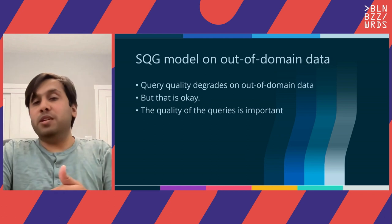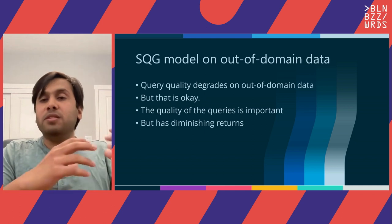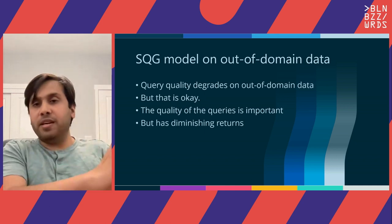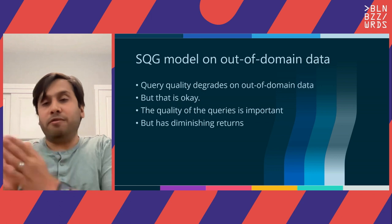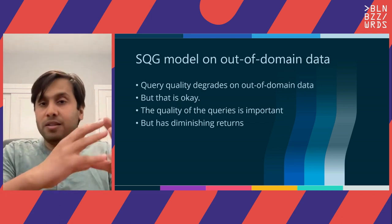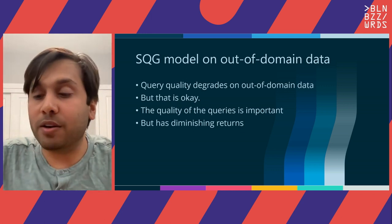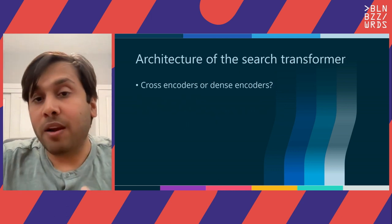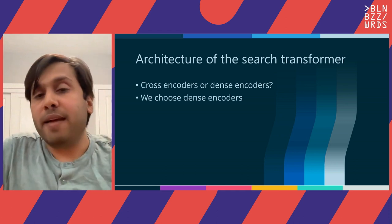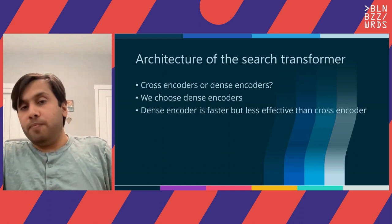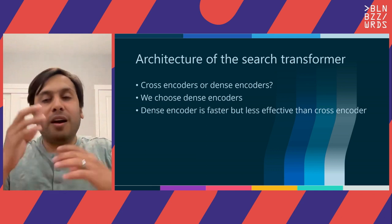But what we find is that this does not matter so much, due to our design choices. Query quality is important, but it has diminishing returns. The reason has to do with how we train the model. We have the synthetic corpus and use it to train our pre-trained transformer to get a fine-tuned transformer. We need to decide what pre-trained transformer to use for fine-tuning on the synthetic corpus. We choose dense encoders — because dense encoders are very quick, although less effective than cross encoders.